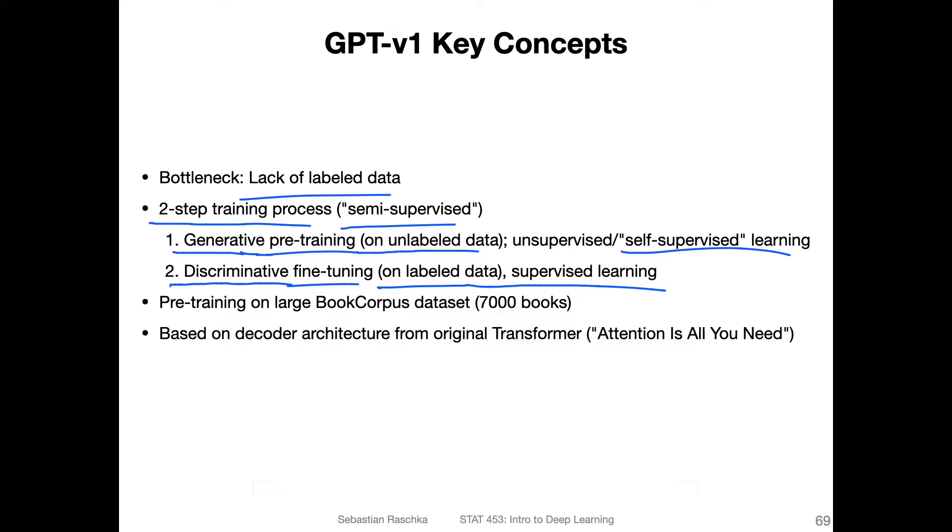The pre-training itself, step one, happened on a dataset that they collected called the BookCorpus dataset, which consists of 7,000 unpublished books. The architecture they used is based on the decoder architecture of the original transformer model that we talked about, the one that was proposed in the Attention is All You Need paper.